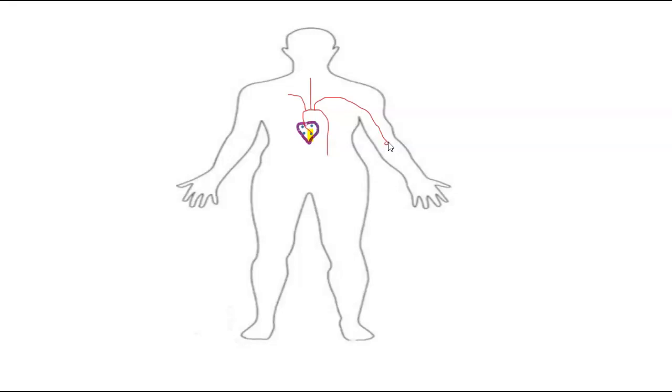At the elbow region, it splits off into the radial artery, which is on the thumb side, and the ulnar artery. Now these two arteries connect in the hand, and you can see the blood vessels going to the fingertip. This is called the palmar arch.